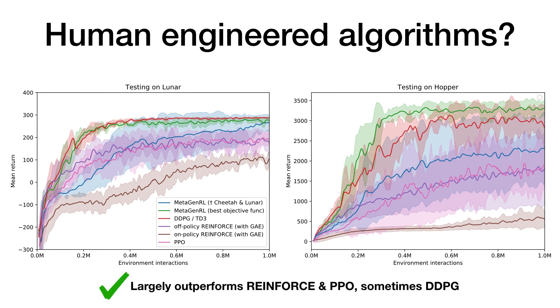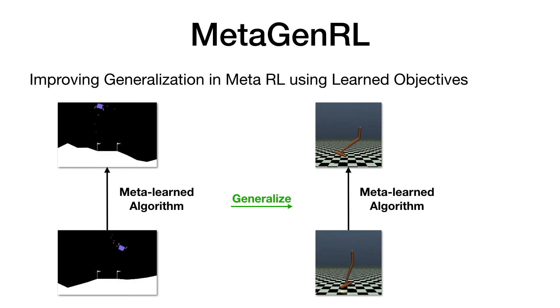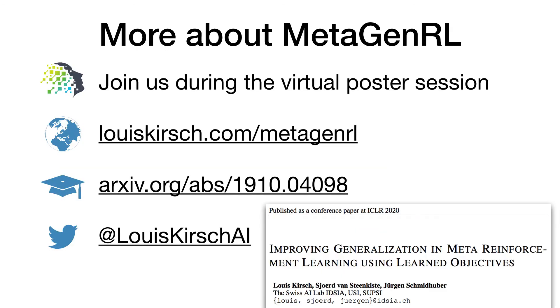More experiments such as ablations, additional environments, and an analysis of the learning behavior can be found in the paper. In summary, we have introduced meta-general, a framework to meta-learn objective functions that generalize to environments quite different from the training distribution. Please join us at the poster or follow any of these links to learn more.